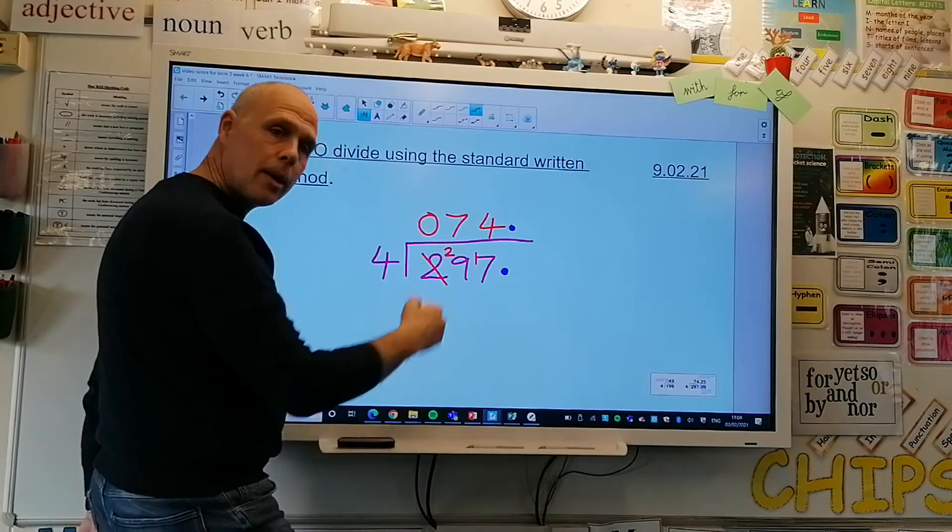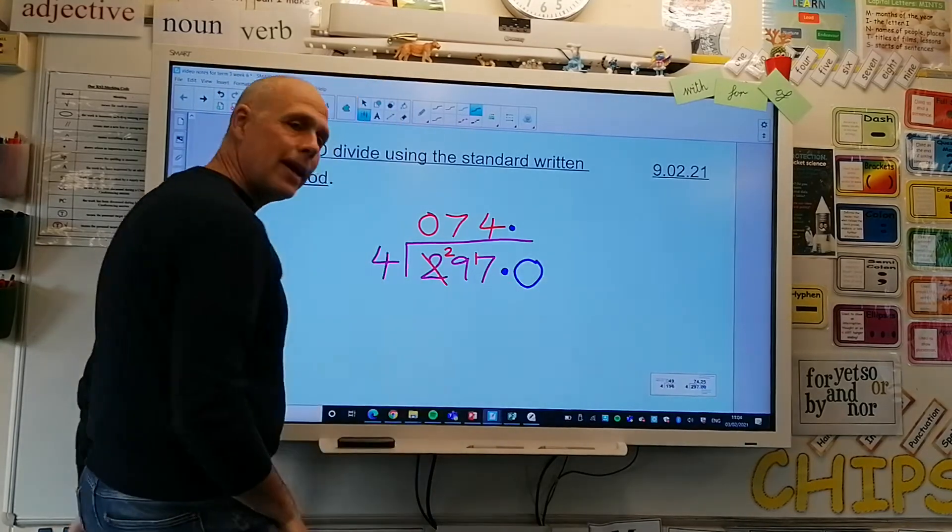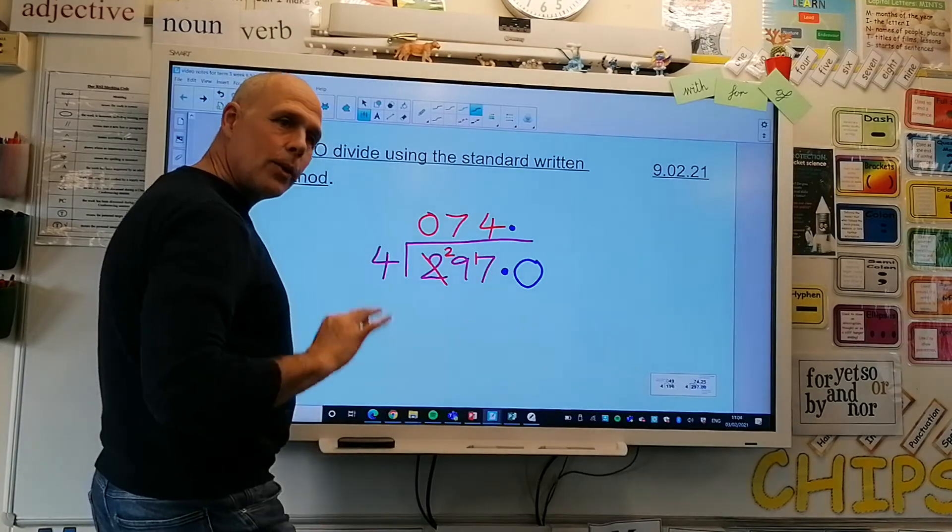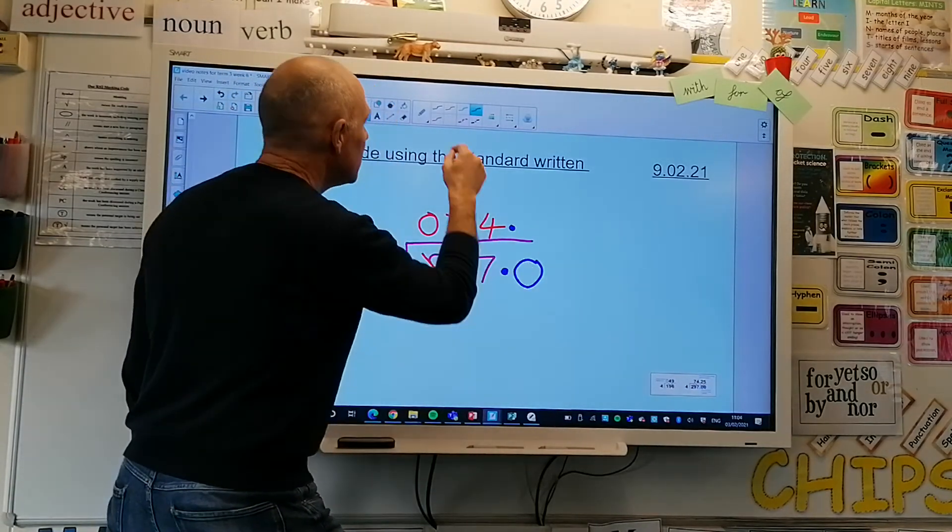I'm going to put 1 up there on my answer line and then I'm going to bring a zero in. And I'm going to take that 1 and I'm going to exchange it for 10 in the next column. So I've now got 10. 10 shared between 4, two, two.